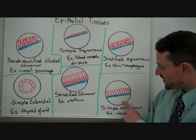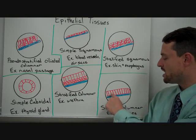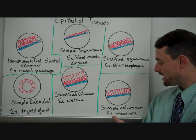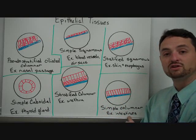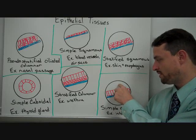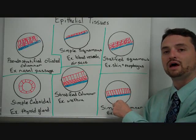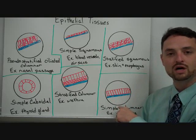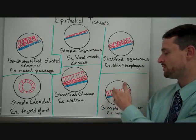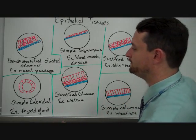Finally, we have simple columnar — just column cells on top of that basal membrane. That is stuff like your intestines, so you get food from the intestinal tract into the blood supply. But there's a passageway that protects the organism so stuff can't just go in and out of your blood supply — that would be bad.